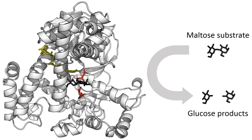An enzyme's name is often derived from its substrate or the chemical reaction it catalyzes, with the word ending in -ase. Examples are lactase, alcohol dehydrogenase and DNA polymerase. Different enzymes that catalyze the same chemical reaction are called isozymes. The International Union of Biochemistry and Molecular Biology have developed a nomenclature for enzymes called the EC numbers. Each enzyme is described by a sequence of four numbers preceded by EC, which stands for Enzyme Commission.